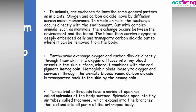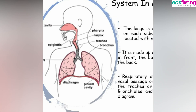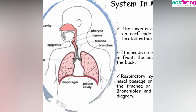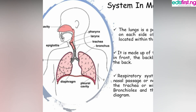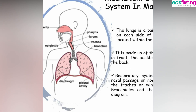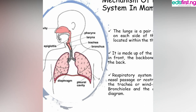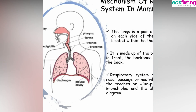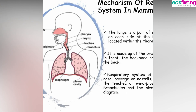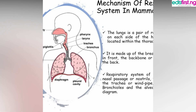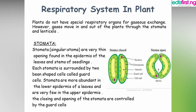The respiratory system in higher animals — as you can see in the diagram — includes the nasal cavity, the right lung, the left lung, the diaphragm, the lung cavity, and the trachea with its branches. They are all responsible for respiration.